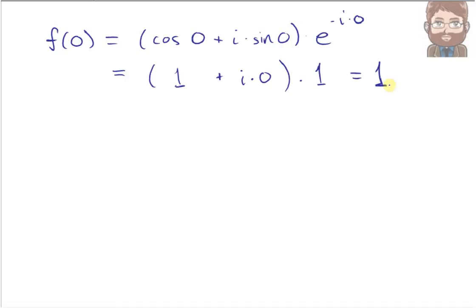Now since f equals 1 for one value, and f(x) was a constant, this implies that f(x) is actually equal to 1 for all values of x.